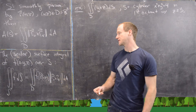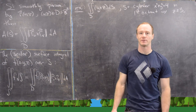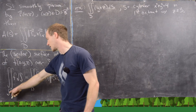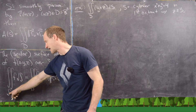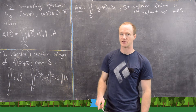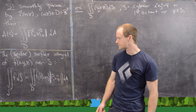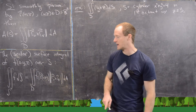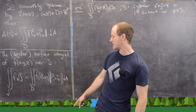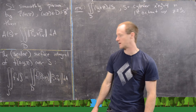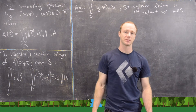The scalar surface integral of a function F(x, y, z) on a surface S, where S is smoothly parameterized by R, is written as the double integral over S of F dS. This is given by F evaluated at the x, y, z output of our parameterized function, multiplied by the magnitude of R_u cross R_v. All it really involves is putting this extra function in here, so once you have the parameterization of the surface you're good to go.